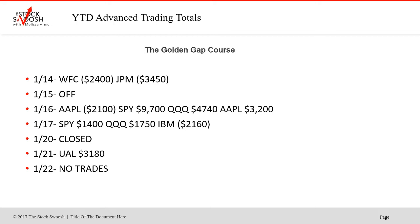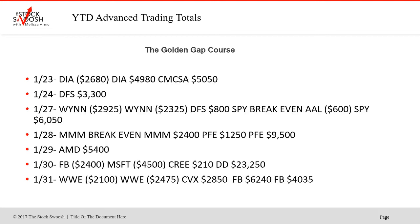No trades on the 22nd. You'll learn in the class that I will not do anything if it doesn't rate per my system — nothing at all. There are days when we may not get any good gaps, may not get any good longs or shorts. The 23rd — deal was a loser, second one winner. CMCSA was a winner. DFS was a nice winner on the 24th.